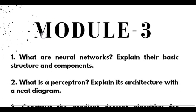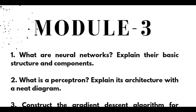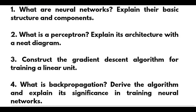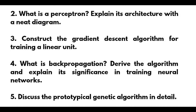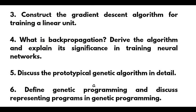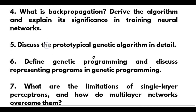Coming to Module 3, the important questions are: what are neural networks — explain their basic structure and components; what is a perceptron — explain its architecture with a neat diagram; construct the gradient descent algorithm for training a linear unit; and what is back propagation — the most important one — derive the algorithm and explain its significance in training neural networks.